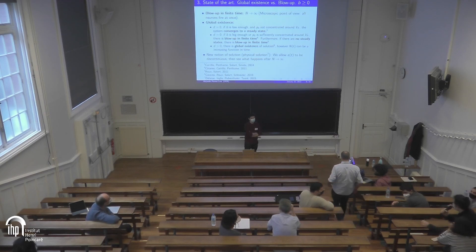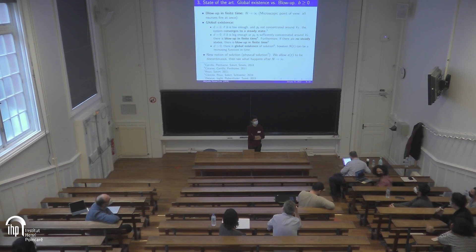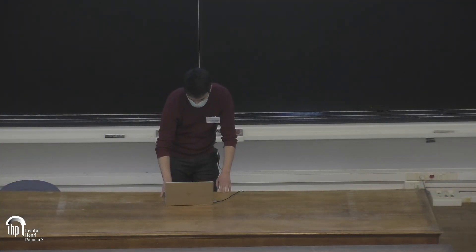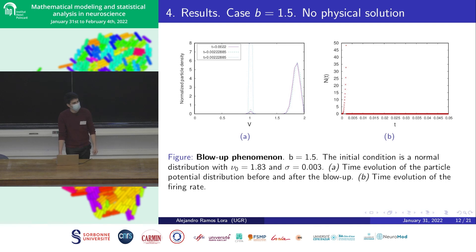A further question: in the case of blow-up in finite time, was the divergence rate computed — like the speed at which N(t) diverges to infinity? Is it something like one over square root of t, one over t, or one over (t* minus t)? The presenter responds: the firing rate is known to diverge, but the exact speed of the divergence is not known.